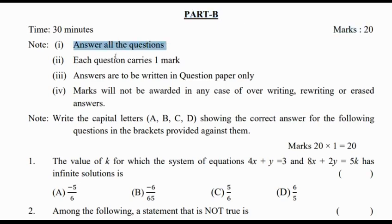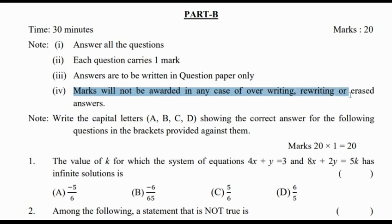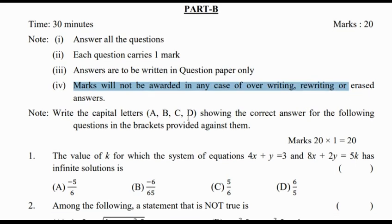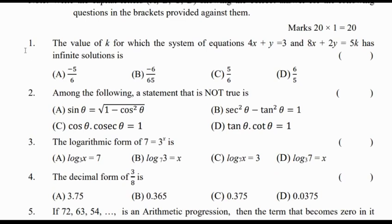Part B contains 20 marks. We have to answer all the questions. Each question carries one mark, and answers are to be written in the question paper only. Marks will not be awarded in any case of overwriting, rewriting, or erased answers.